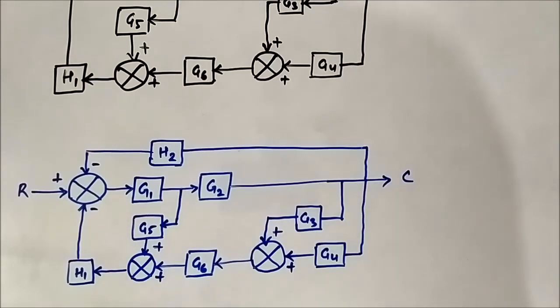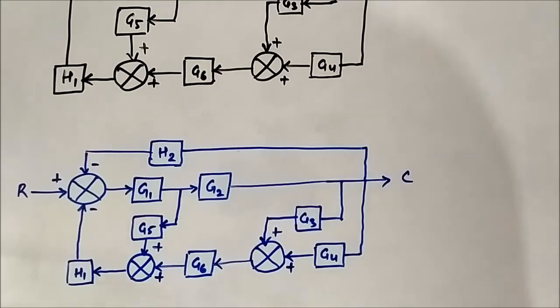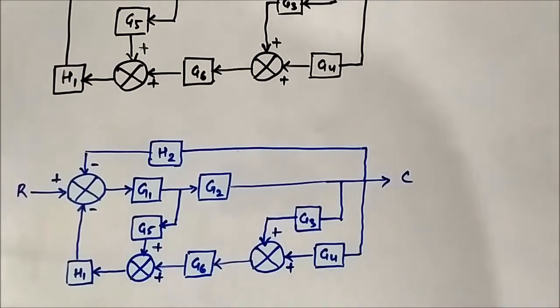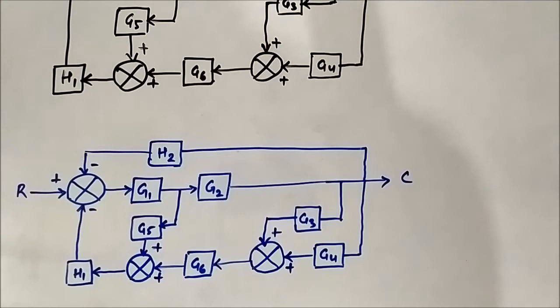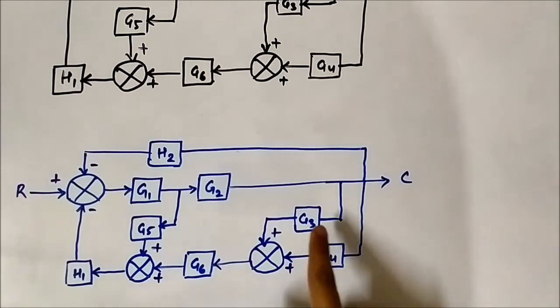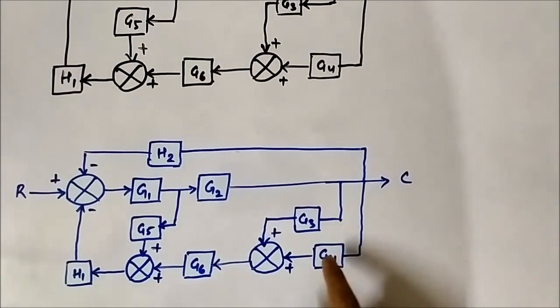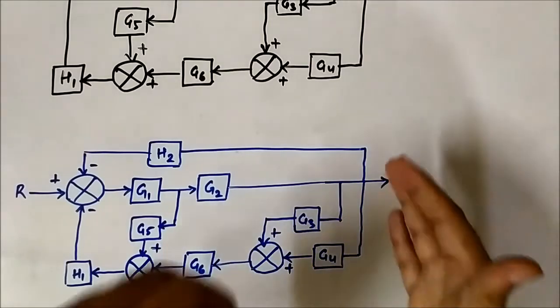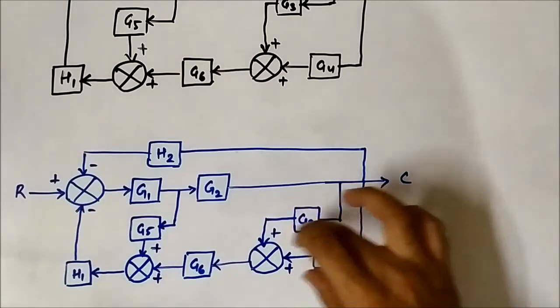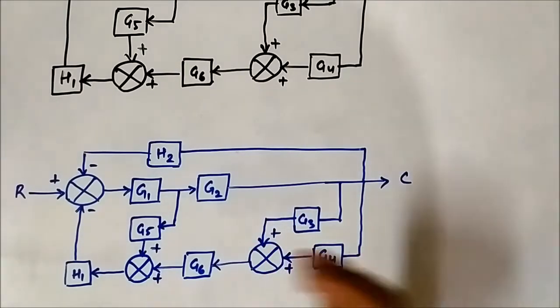The usual approach: try to find out a spot, a region where we can apply the block diagram reduction rule. Finding a spot to attack in this whole thing where we can somehow apply the rule. Once we find that spot, it becomes easier. Here in this portion, if you see these two blocks along with this summer, they are in forward path. Although it may seem like a feedback path, it is both plus sign, positive sign. So it is in forward path.